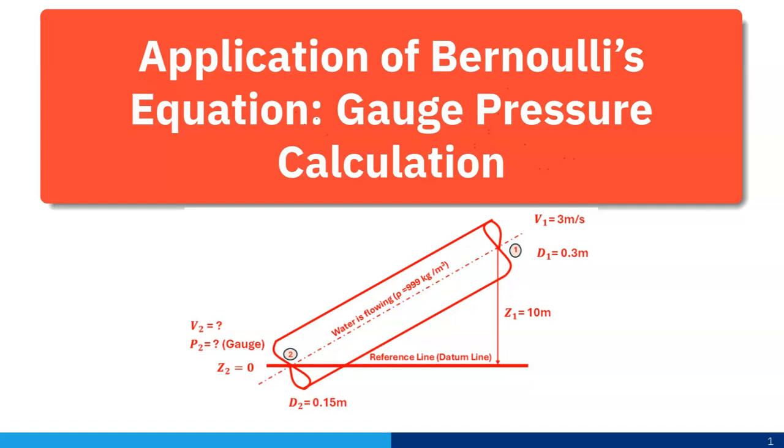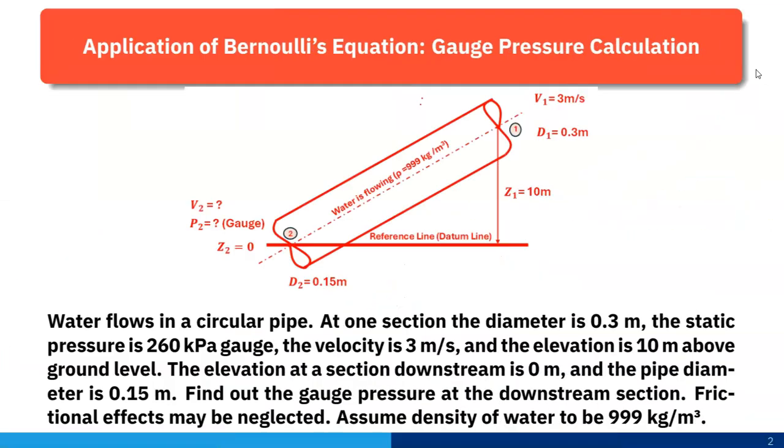Today I'll solve one numerical problem based on application of Bernoulli's equation. Here I'll calculate gauge pressure in a pipe flow. Water is flowing in a circular pipe. At one section, the diameter is 0.3 meter, the static pressure is 260 kilopascal gauge, and velocity is 3 meter per second.